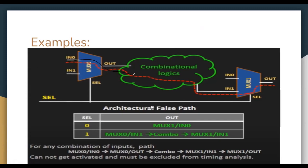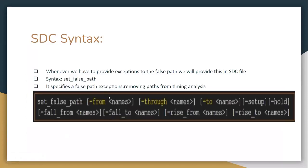This path will be the false path. We can exclude it using the same syntax as before: declare the false path and specify the from and to endpoints — from which flip-flop to which flip-flop. If there are any combinational logic elements in between, such as AND or OR gates, we can also declare those in the constraint as needed.